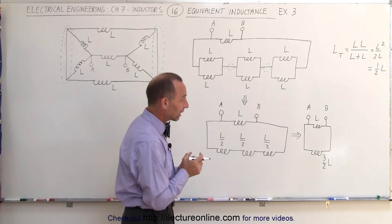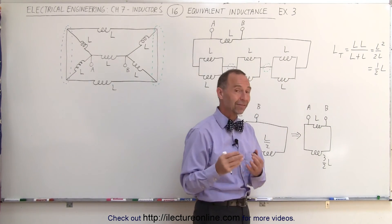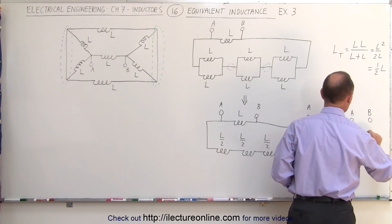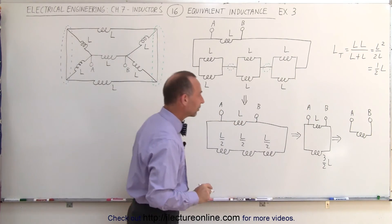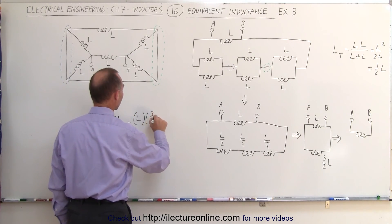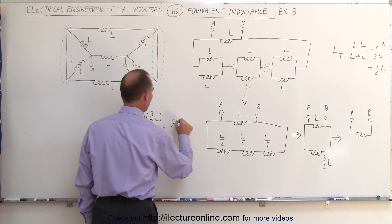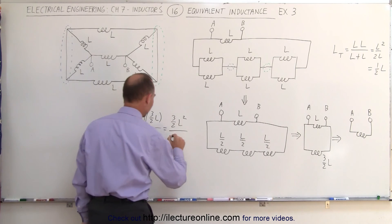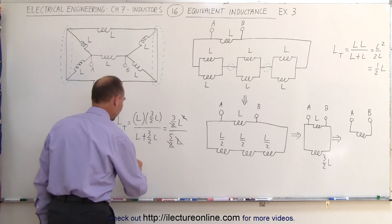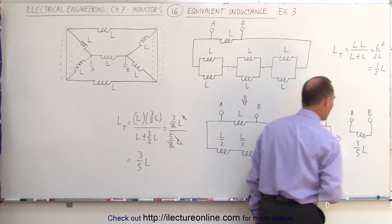Finally, we can combine those two inductors — L and 3/2 L — into a single inductor. From A to B, we can either go through the L inductor or through the 3/2 L inductor, so they are in parallel. Using the product-over-sum rule: L total equals L times 3/2 L divided by L plus 3/2 L, which equals 3/2 L squared divided by 5/2 L. The L terms cancel appropriately, giving us 3/5 L as the equivalent inductance of the original circuit.